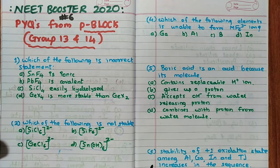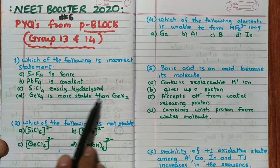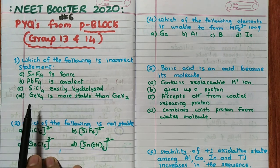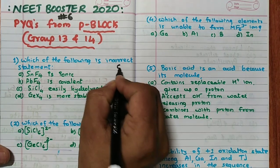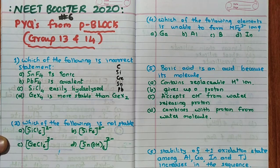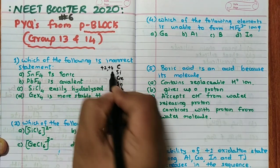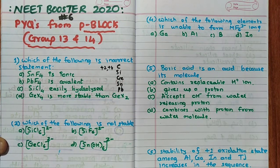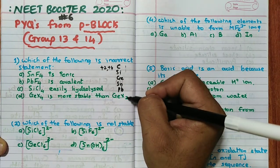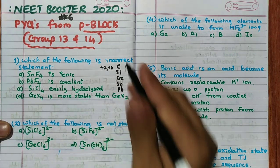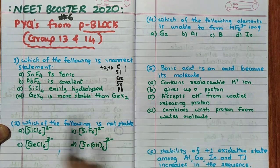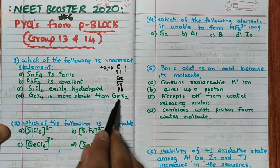SiCl4 being easily hydrolyzed is 100% correct. GeX4 being more stable than GeX2 is also correct. In group 14 — carbon, silicon, germanium, tin, lead — the common oxidation states are +2 and +4. Down the group, due to the inert pair effect, +2 stability increases and +4 stability decreases. However, germanium is in the middle, so GeX4 is still more stable than GeX2.